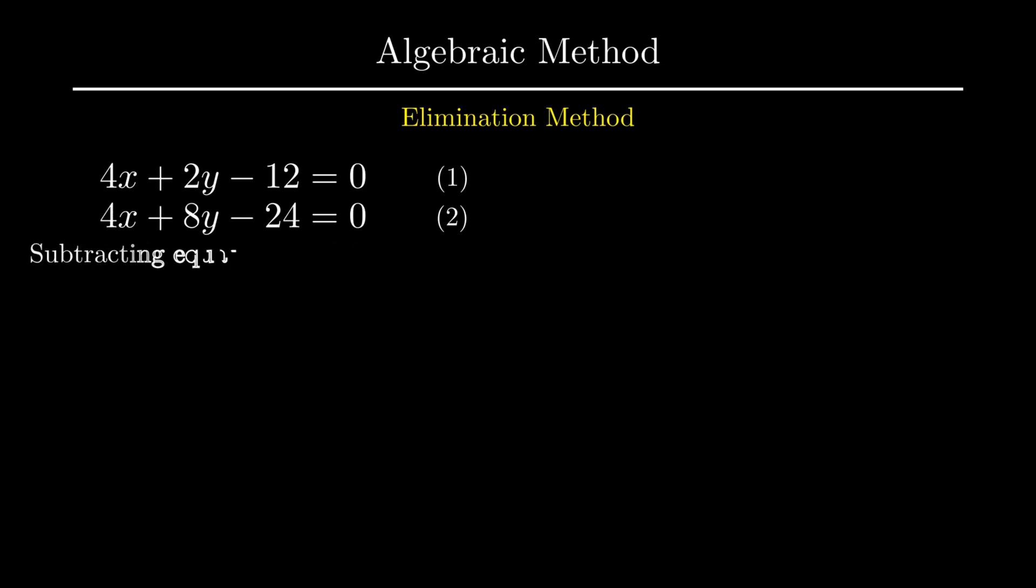In order to eliminate, the sign of the terms need to be made opposite so that they cancel out each other. So on subtracting equation number 1 and equation number 2 we get minus 6y plus 12 equal to 0. By rules of transposing it is simplified as 6y equal to 12. On further simplification we get y as 2.